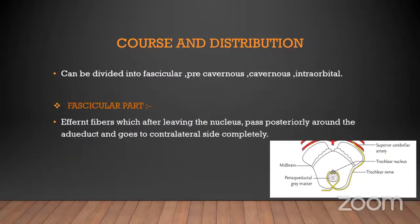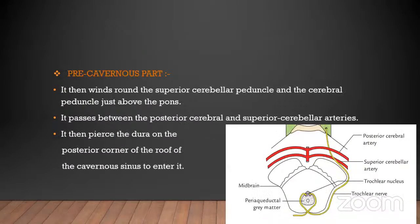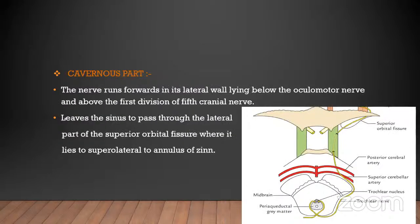The course and distribution is divided into four parts: fascicular, precavernous, cavernous (intracavernous), and intraorbital. In the fascicular part, the efferent fibers after leaving the nucleus pass posteriorly around the periaqueductal gray matter and cross to the contralateral side completely. In the precavernous part, the nerve winds around the superior cerebellar peduncle just above the pons, passes between the posterior cerebral and superior cerebellar arteries, pierces the dura mater at the roof of the cavernous sinus, and enters the cavernous sinus. In the cavernous part, the nerve runs forward in its lateral wall.